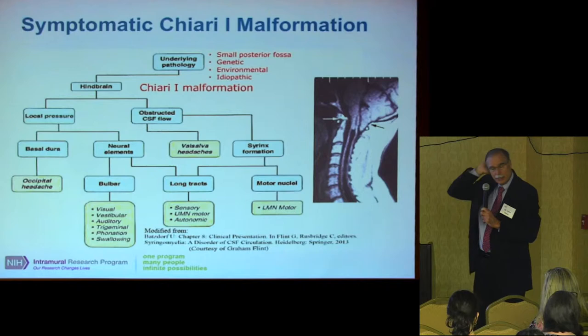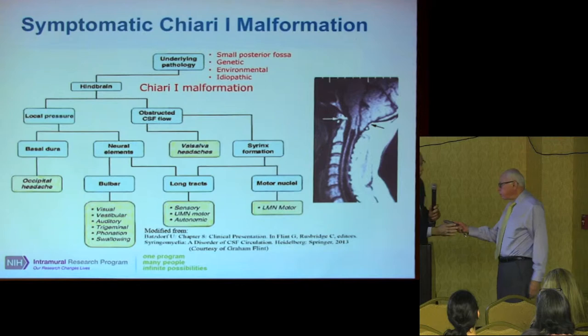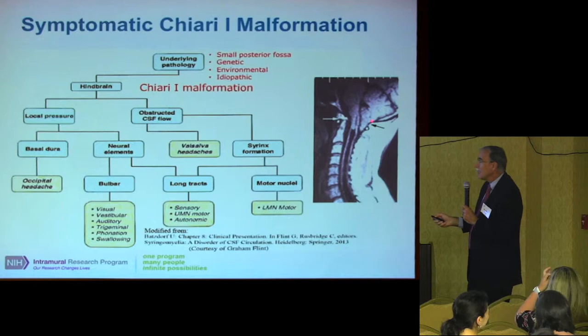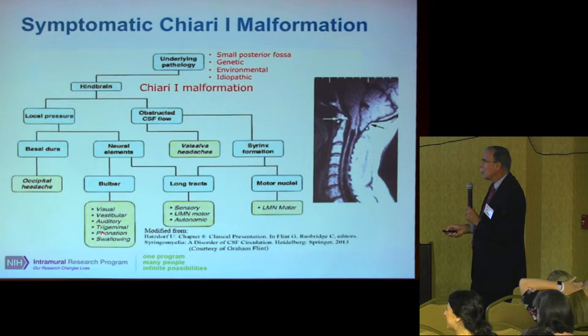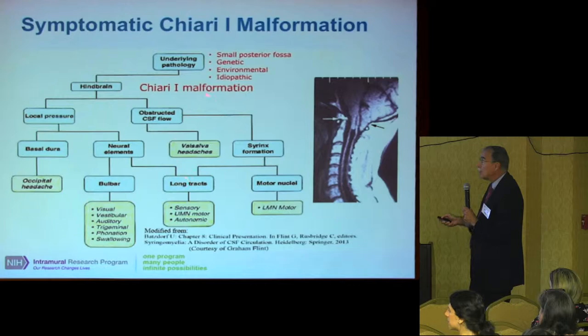The symptoms in the yellow include valsalva headaches, occipital headaches, and bulbar symptoms coming from the brainstem and medulla — things like visual, vestibular, auditory, trigeminal, phonation, and swallowing problems, as well as lower motor neuron symptoms like spasticity and sensory and autonomic problems. So the mechanism starts it, works its way through the nervous system, and those are the manifestations — what you feel.